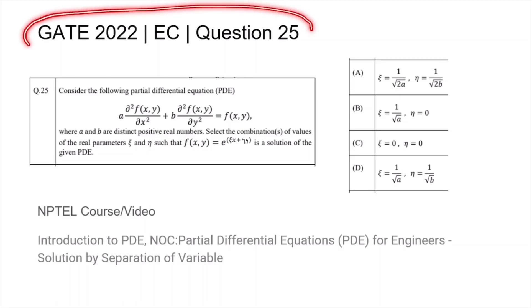This is question 25 from the GATE 2022 EC paper where we are given the following partial differential equation and are asked to find out what values of zeta and eta will satisfy as a solution e^(zeta x + eta y).